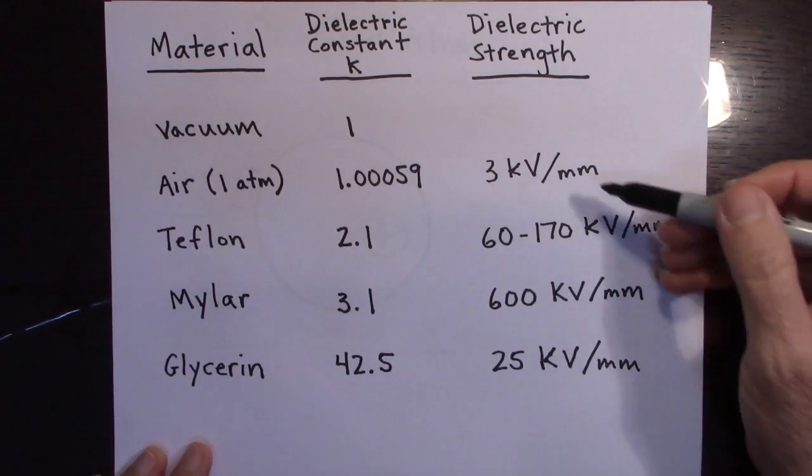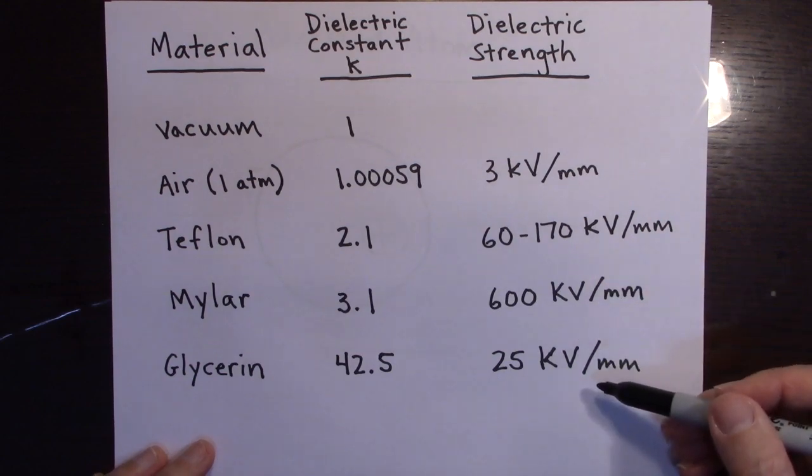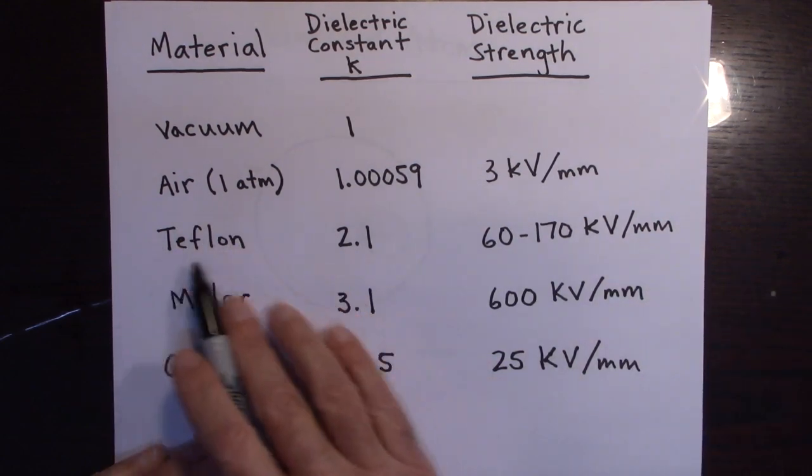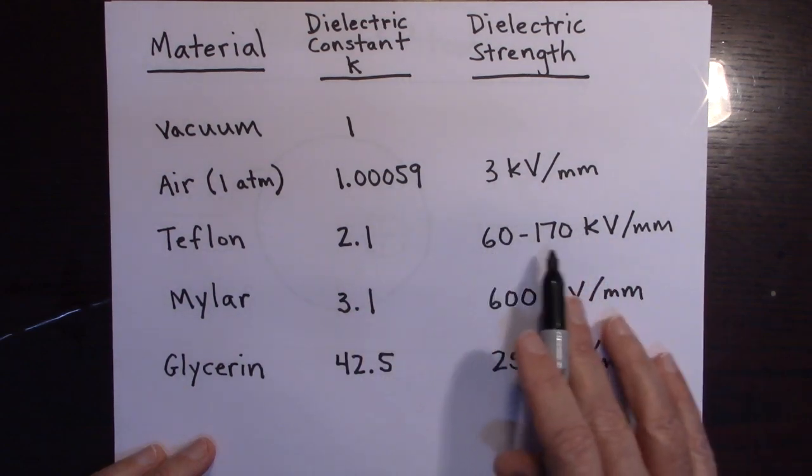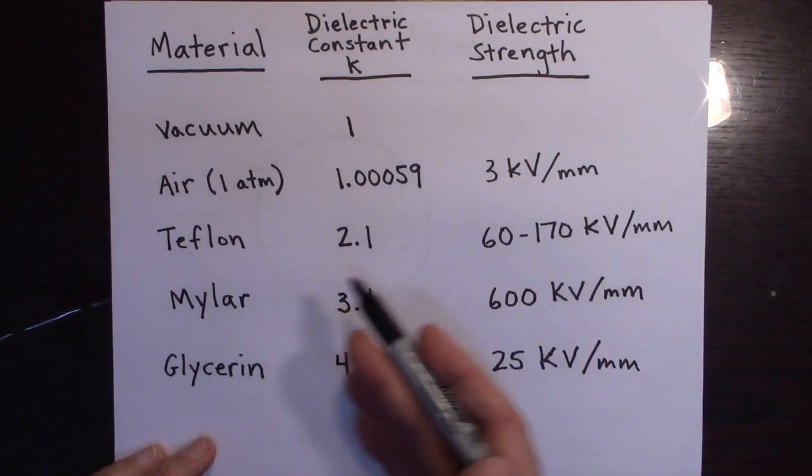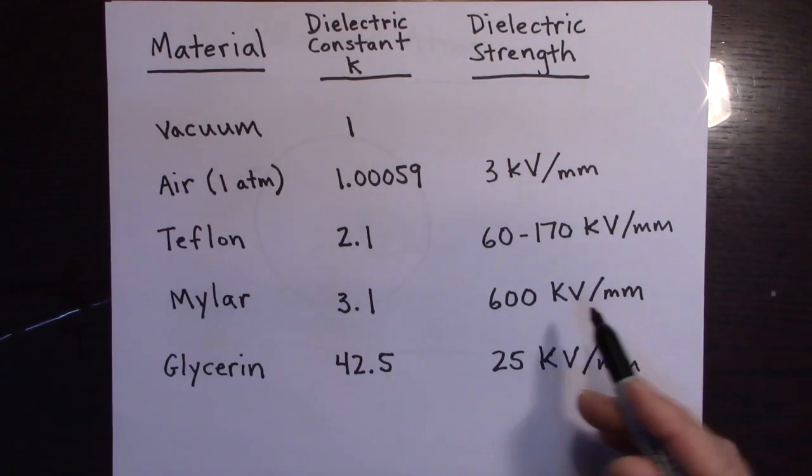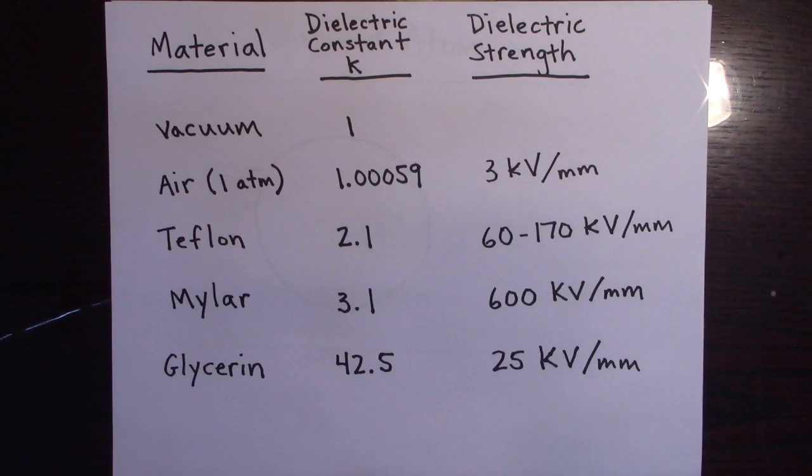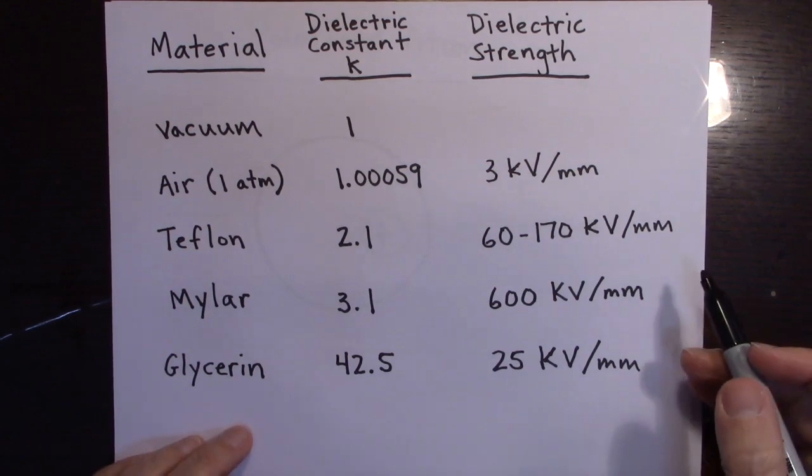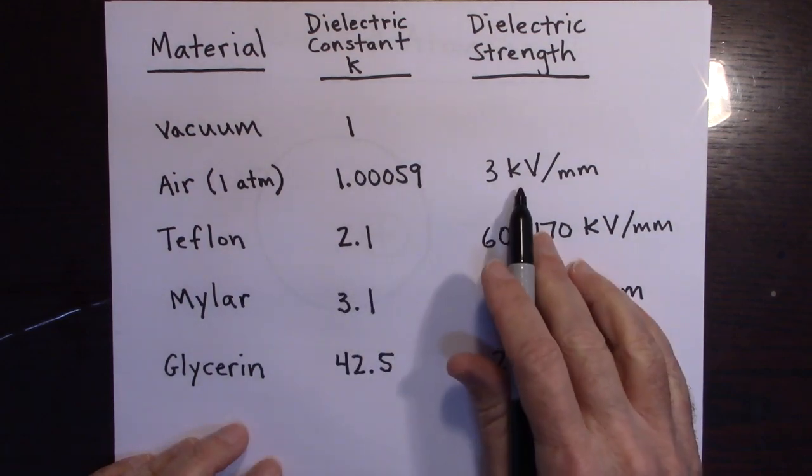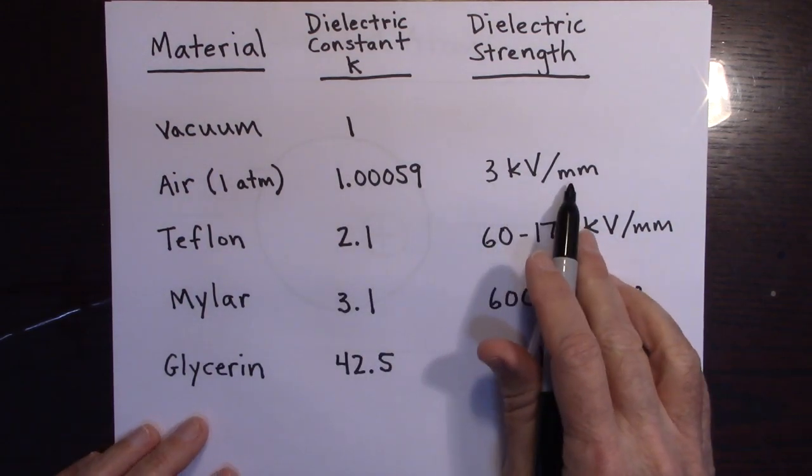And I'm making it seem more simple than it actually is. Teflon doesn't have a set dielectric strength. It varies depending on the thickness of the Teflon and how it's arranged. If it's in thin layers or what have you.